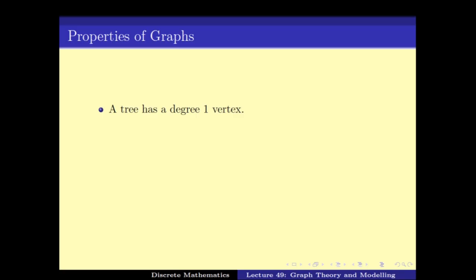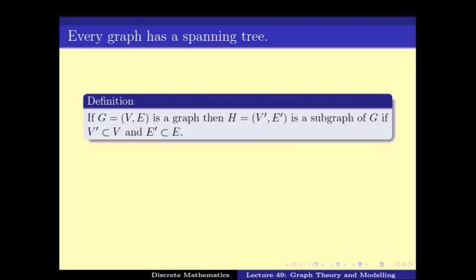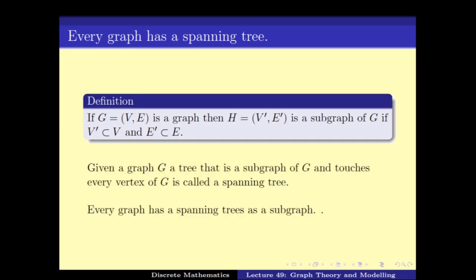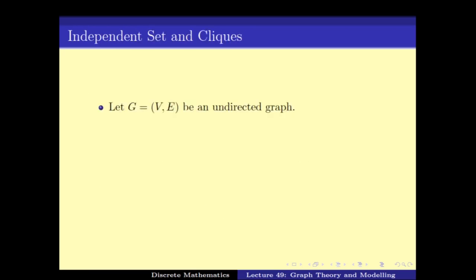We have seen nice properties of trees. For example, a tree has a degree one vertex. If you remove a leaf from a tree, then it's still connected. We have also proved that every graph has a spanning tree, that is the tree that touches all the vertices.